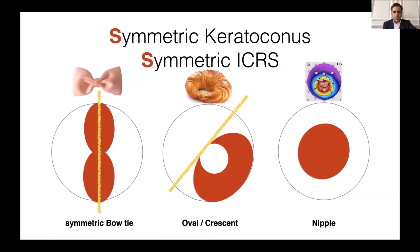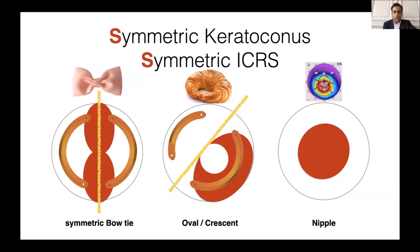There is symmetric keratoconus which needs symmetric ICRS. For the bottom eye, two symmetric corneal rings from each side. In the oval or crescent form, we need one intracorneal ring segment. Sometimes I put two intracorneal ring segments, but not the same — the second upper one can be less long. In the nipple shape, we need 320 degrees.